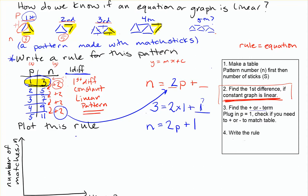by plugging that in. So 2 times the first pattern gives me 2. And I need to have 3 matchsticks total, so I needed a plus 1. So my rule becomes n equals 2p plus 1.